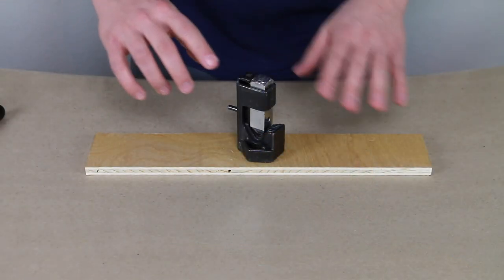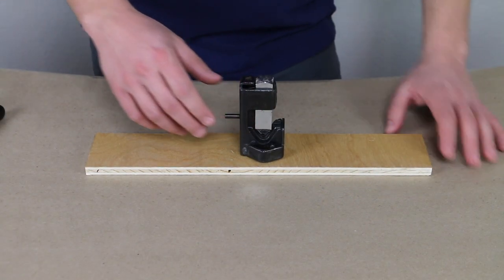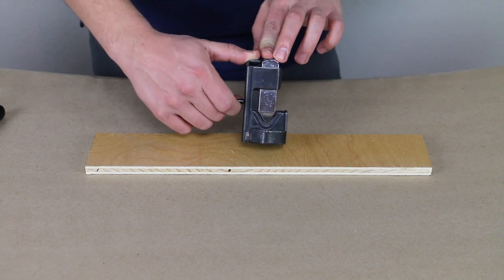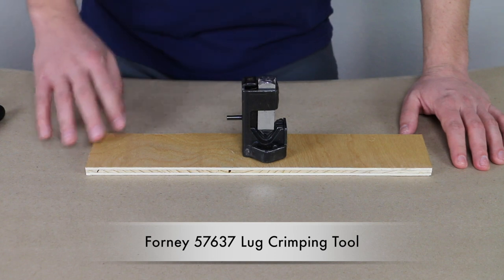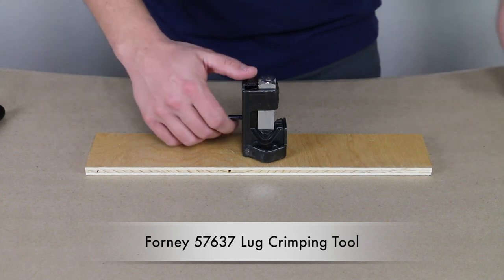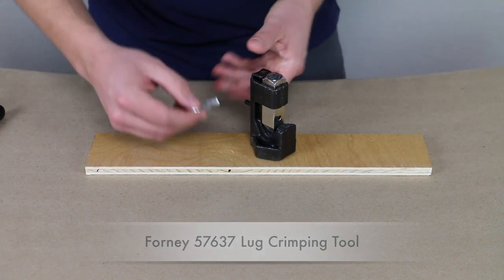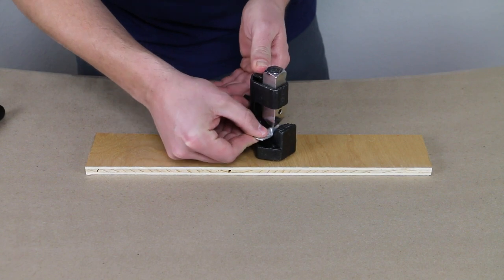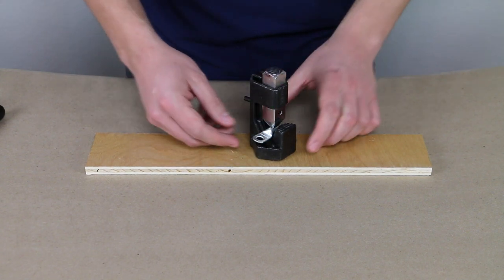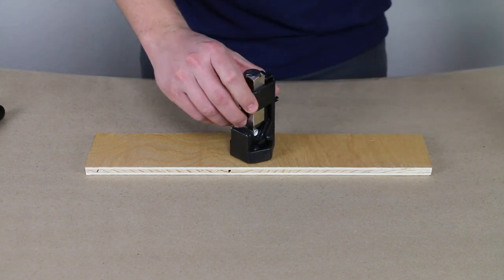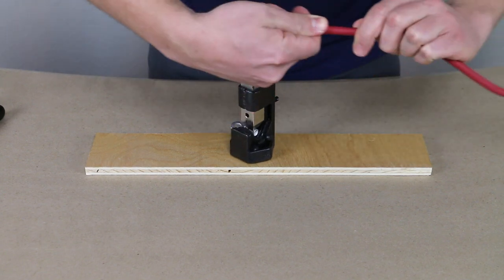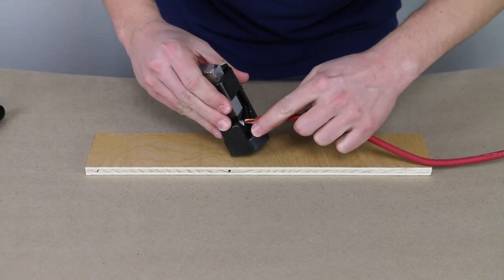All right. So we have the Forney lug crimping tool. This is from Forney. And I'll go ahead and put the model number at the bottom of the screen. This is about $20. So what you're going to do is you're going to retract the anvil and insert your lug terminal. So this is a six-gauge lug terminal. And you can see there at the back, you can insert your cable. So we've got a six-gauge cable and go ahead and thread that in there.